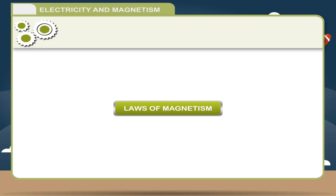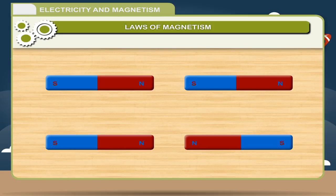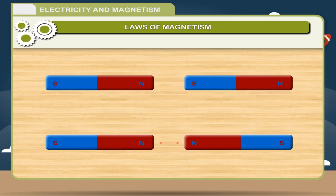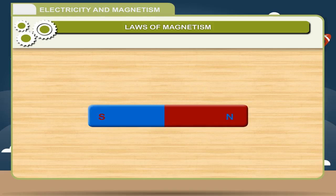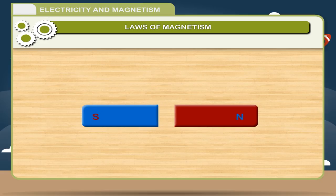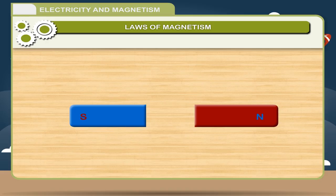Laws of Magnetism: The most basic law of magnetism is that like poles repel one another and unlike poles attract each other. This is easily observed when attempting to place two magnets with the same pole together. All magnetic poles are equal in magnitude and strength, and if a magnet is broken into two smaller magnets, each section becomes its own magnet with two poles of equal strength. Moreover, poles always exist in pairs.